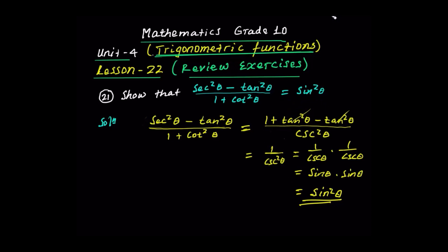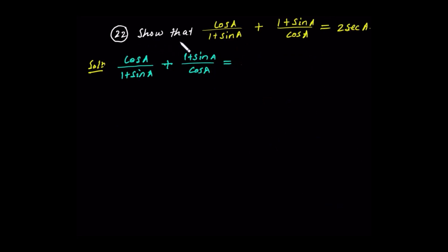Now I have to show that cos(a) over (1 + sin(a)) plus (1 + sin(a)) over cos(a) is equal to 2 sec(a). Start with the left side and arrive at 2 sec(a). To combine the fractions, the LCM is the product of the two denominators.